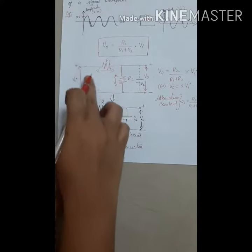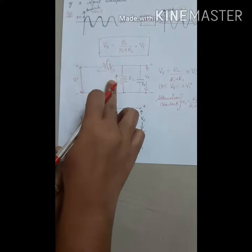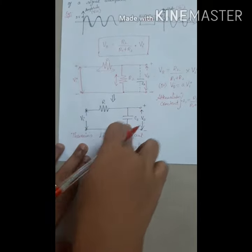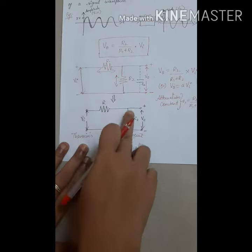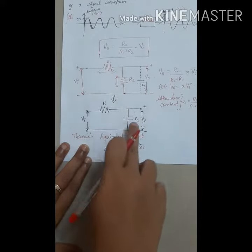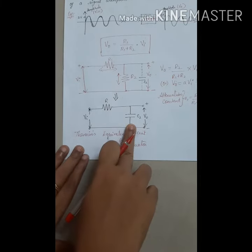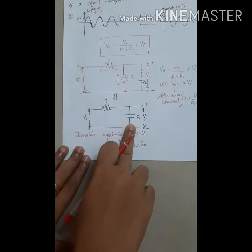By applying Thevenin's theorem to this circuit, the circuit can be reduced and we get the equivalent circuit as R with the stray capacitance C2. This is the hidden capacitance, and we have to draw the circuit as shown in the figure.